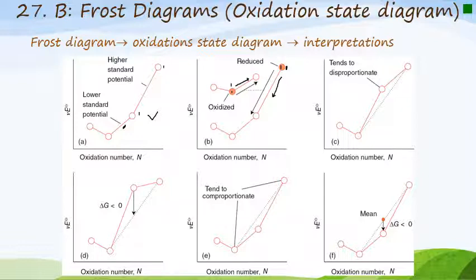Diagrams C and D give an indication of disproportionation. Looking at a couple going from one species to another, if the line connecting the outer species lies above the intermediate species, that intermediate species will tend to disproportionate. Diagram D shows the ΔG values being negative, implying that the reaction is spontaneous — meaning disproportionation will be spontaneous.